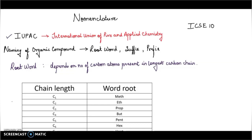Earlier, organic compounds were known by their common name, but now IUPAC names are given to the compounds. According to the system, the name of an organic compound consists of three parts: root word, suffix, and prefix.